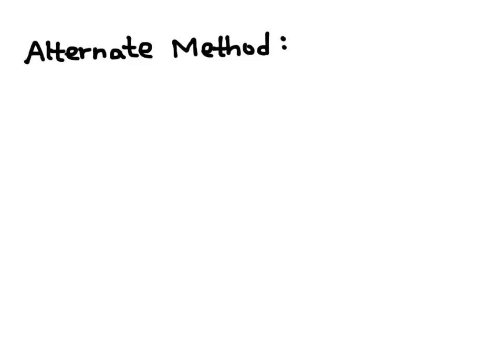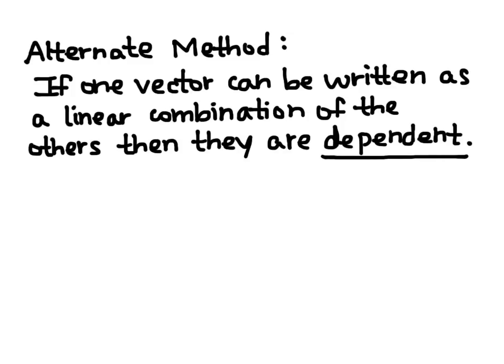And then to be independent, you'd do the opposite. So the alternate method is to recognize that if one vector can be written as a linear combination of the others, then they're dependent, which is the opposite of what we want.